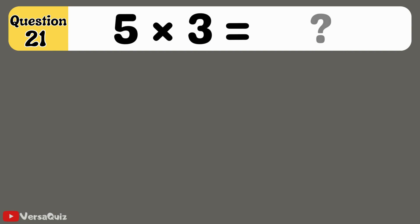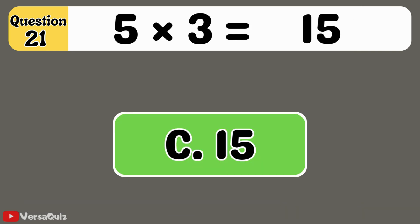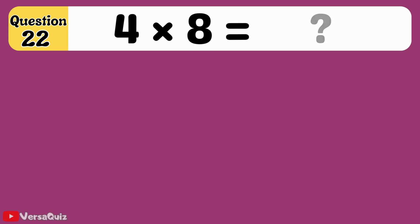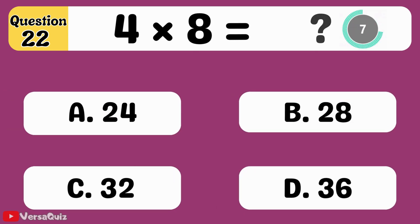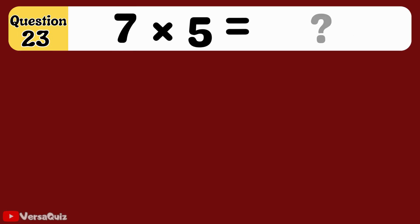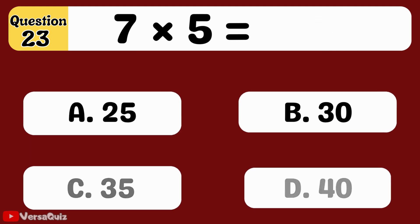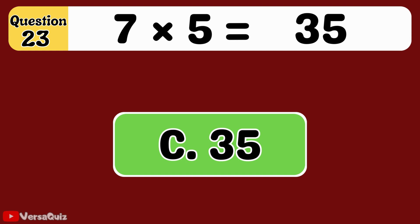5 times 3 is equal to... 15. 5 times 3 equals 15. What is 4 times 8? 32. 4 times 8 equals 32. What is 7 times 5? 35. 7 times 5 equals 35.